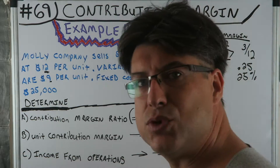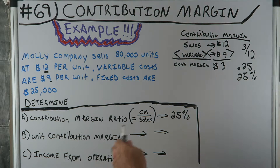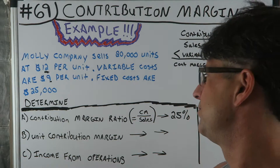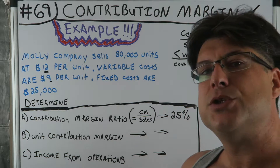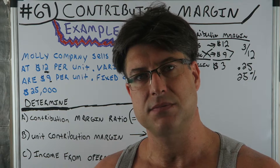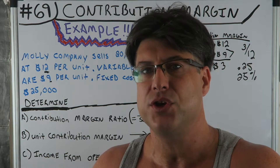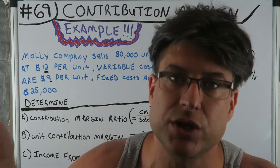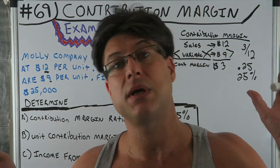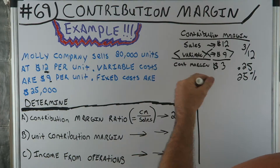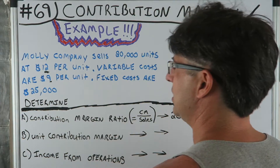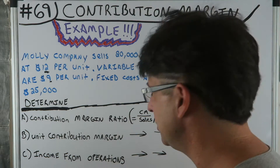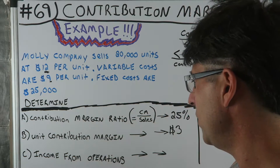Now, unit contribution margin. The contribution margin is sales price minus variable cost — we want to see the profit per unit to know how many units we need to sell to break even. $12 minus $9 is $3 per unit. So contribution margin is $3 per unit.